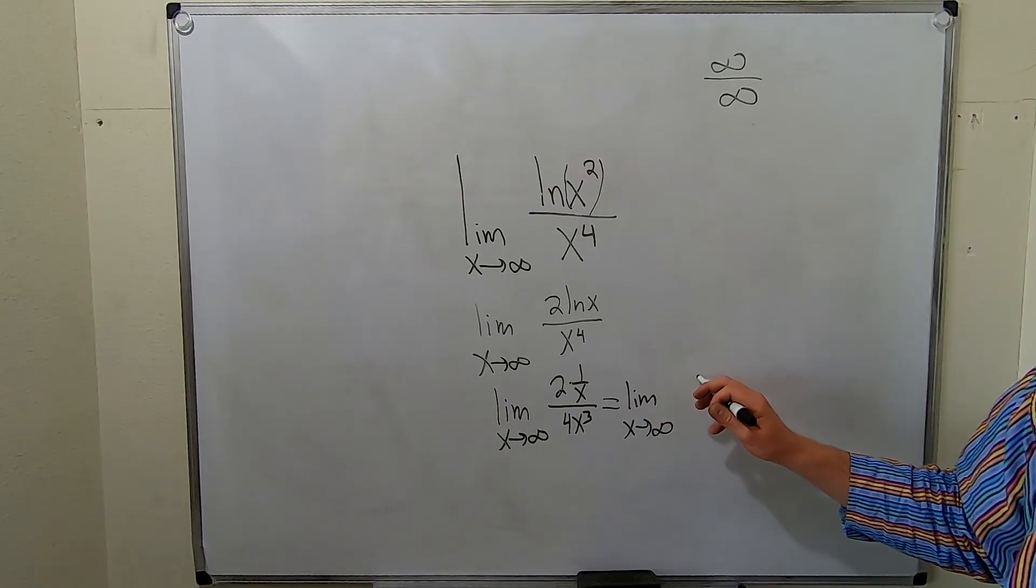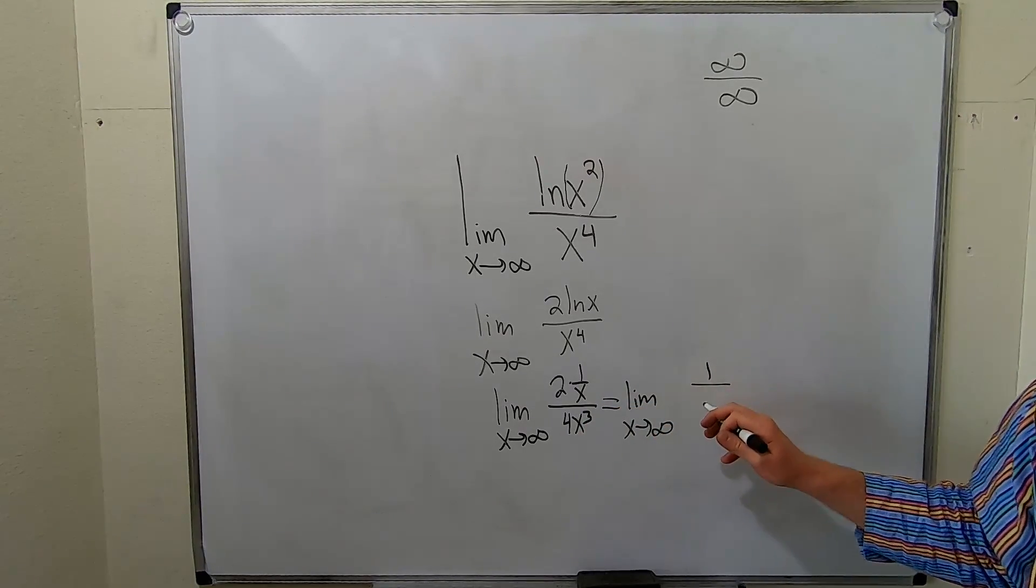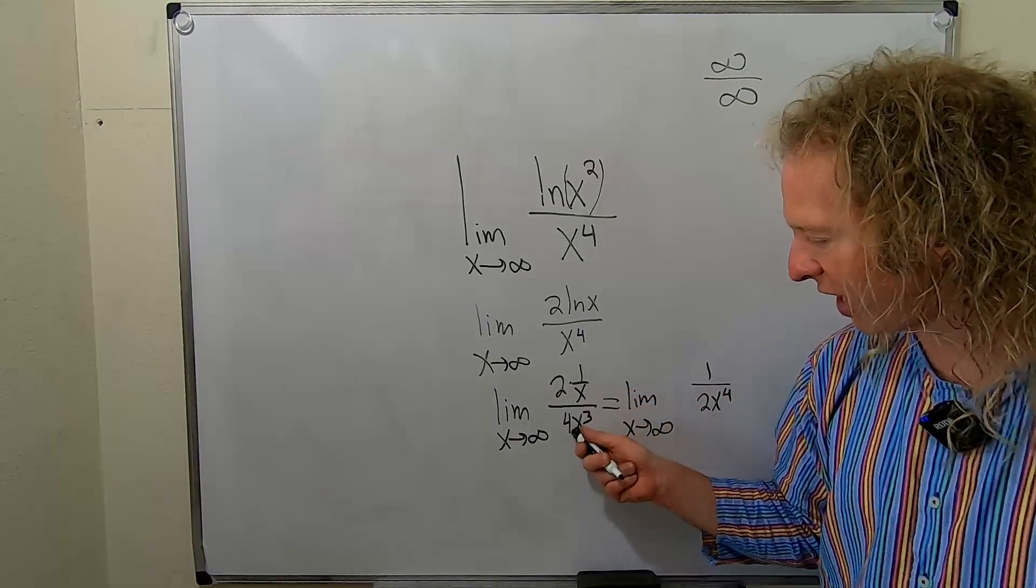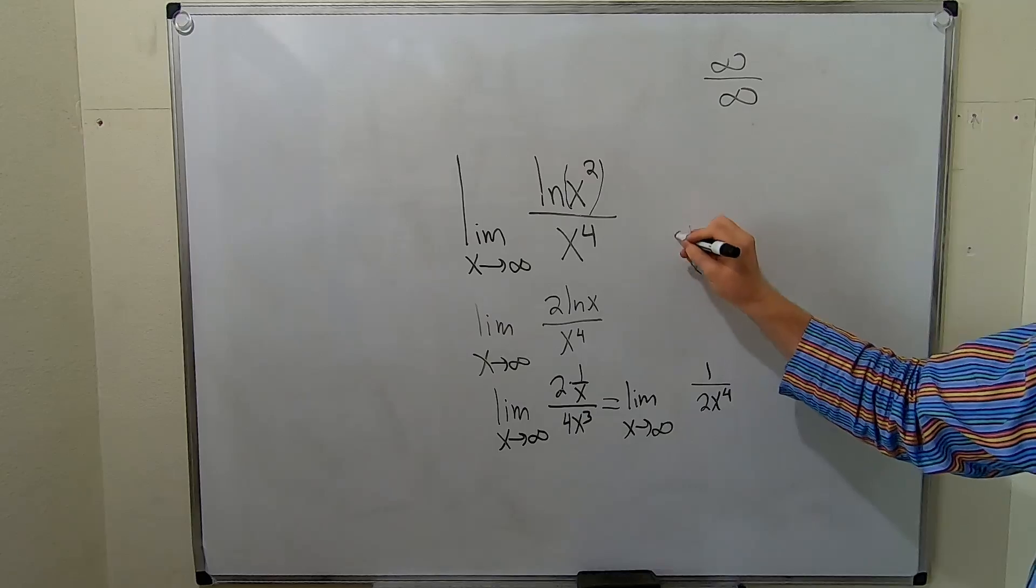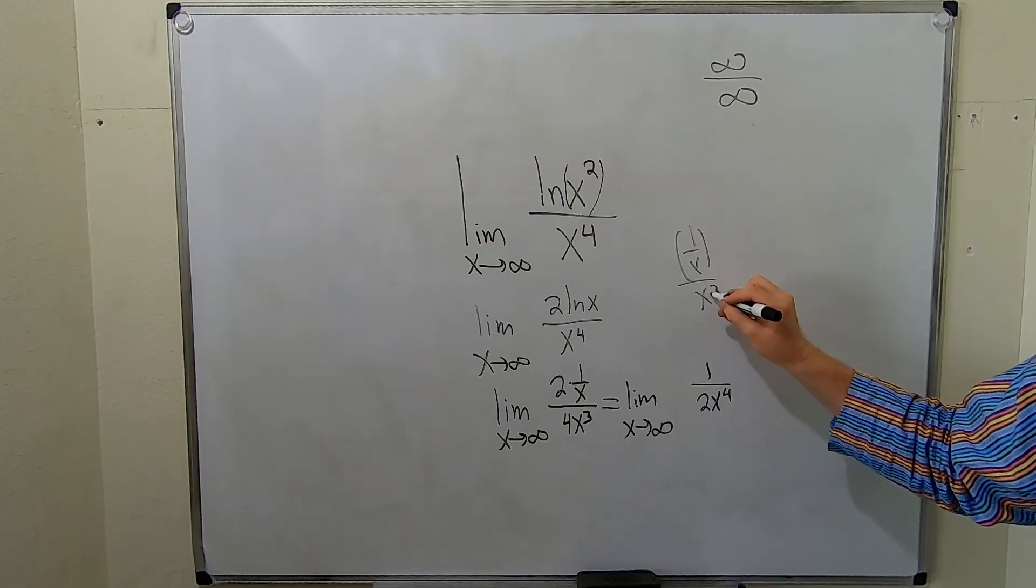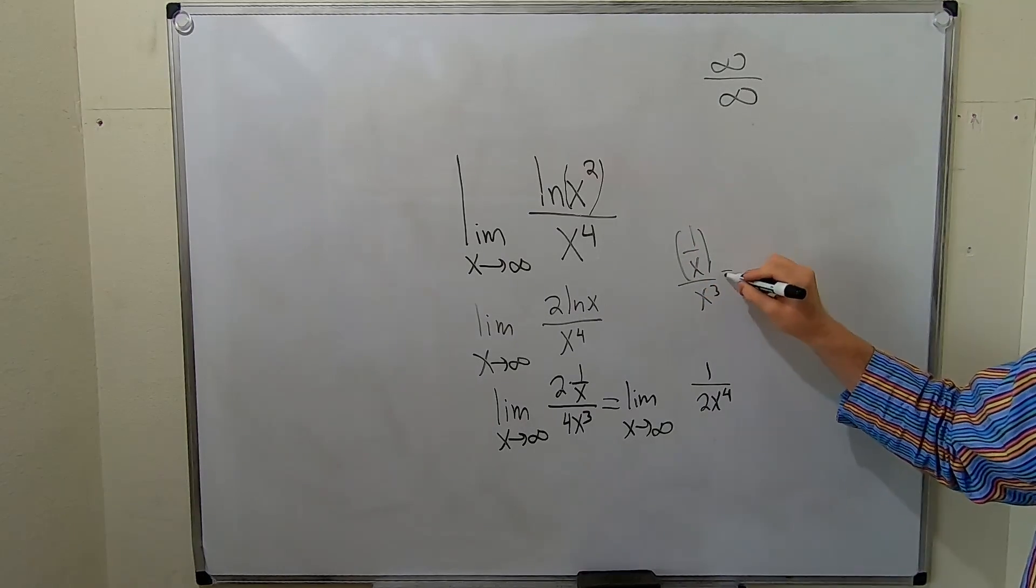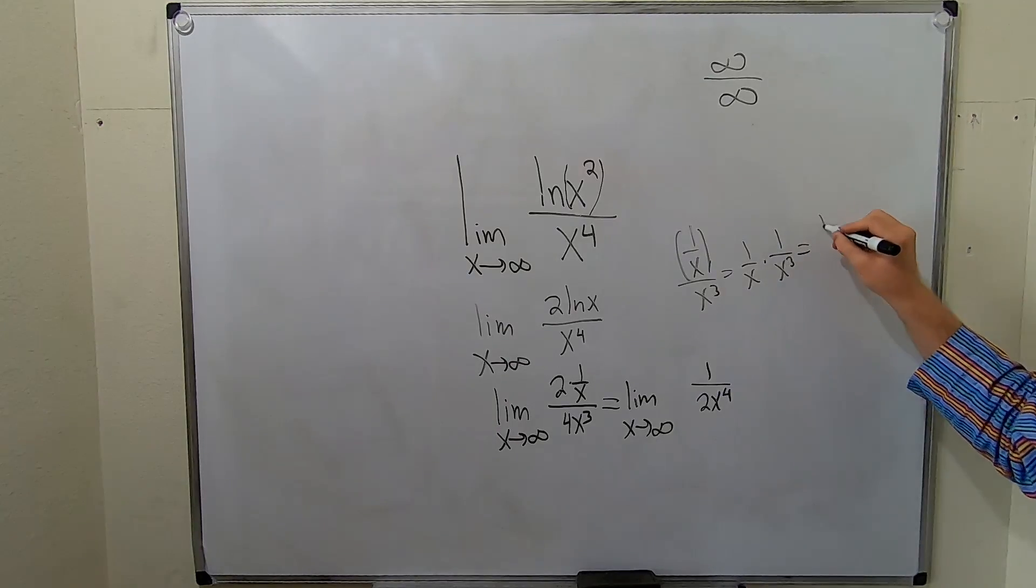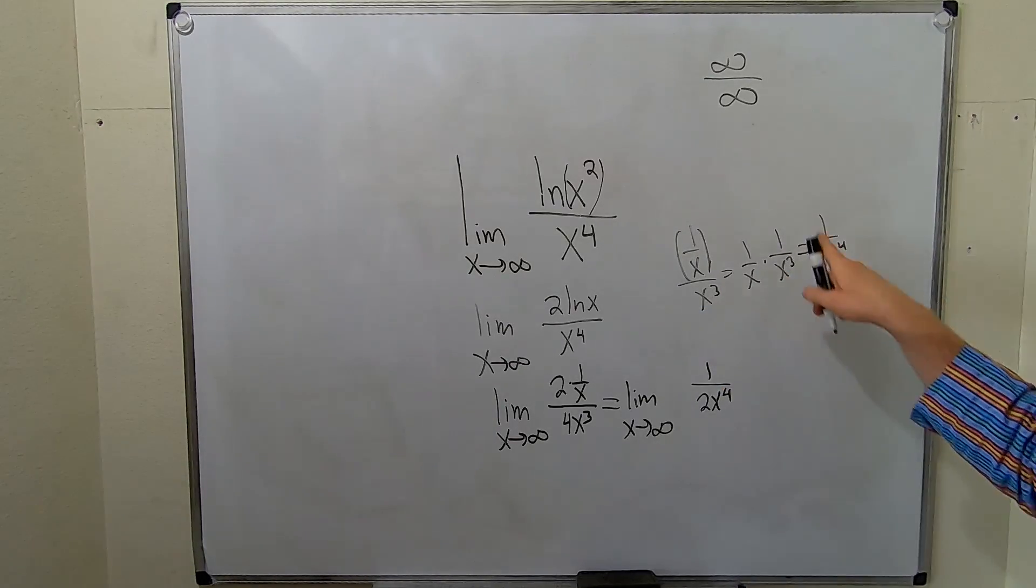This is going to be one over two x to the fourth, because two over four is two and we have one over x over x cubed. Let me show you all the work here. So it's really one over x times the reciprocal of x cubed which is one over x to the fourth. It's just kind of funky work.